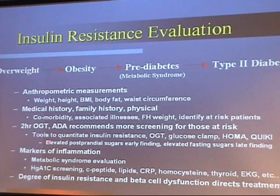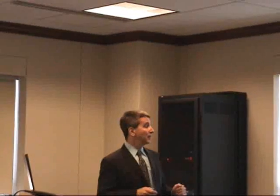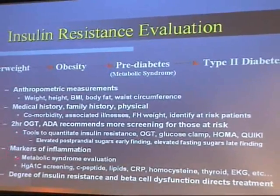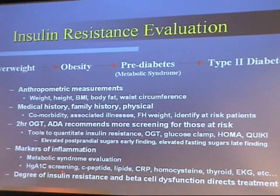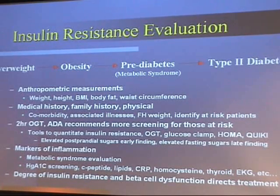Researchers have more elaborate methods like glucose clamp and HOMA-IR, but we don't have those resources in clinical practice. We do the OGTT with three measurements, and the numbers allow us to stage insulin resistance. I've done over 700 OGTTs in my office and it's useful to track how the OGTT changes over time for individual patients. We also measure markers of inflammation — hemoglobin A1c, C-peptide, lipids, CRP — as part of a full metabolic syndrome evaluation. In 2009 the ADA recommended HbA1c as a screening tool. It is the degree of insulin resistance and beta cell dysfunction that directs our treatment.